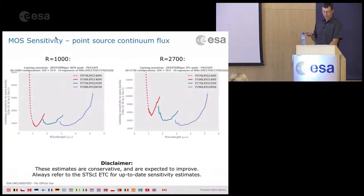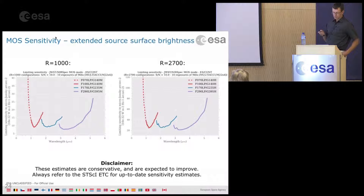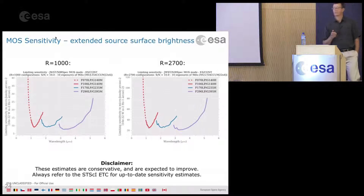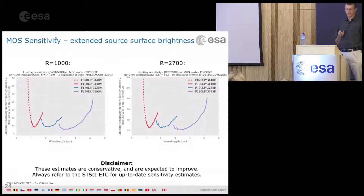In conclusion, MOS sensitivity curves are provided for point-source continuum flux in R1000 and R2700 modes, as well as surface brightness sensitivity in watts per square meter per hertz per arcsecond squared. These curves are conservative — treat them as lower limits. The sensitivity model and ETC are still being revised and will likely show slightly better results when released.